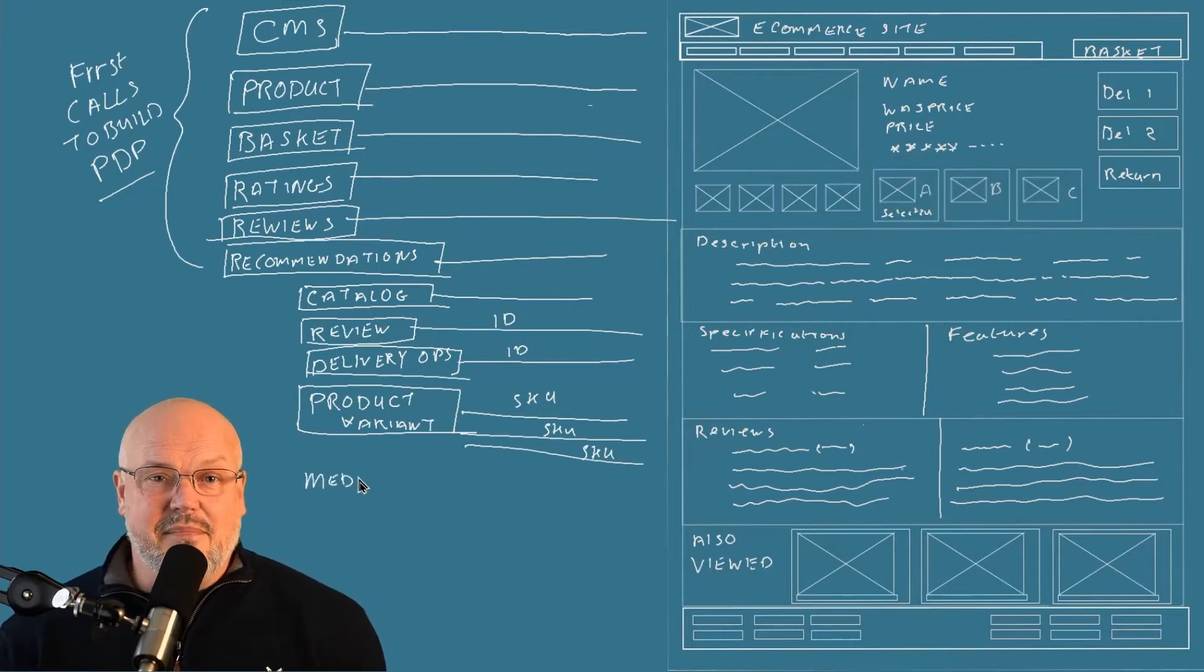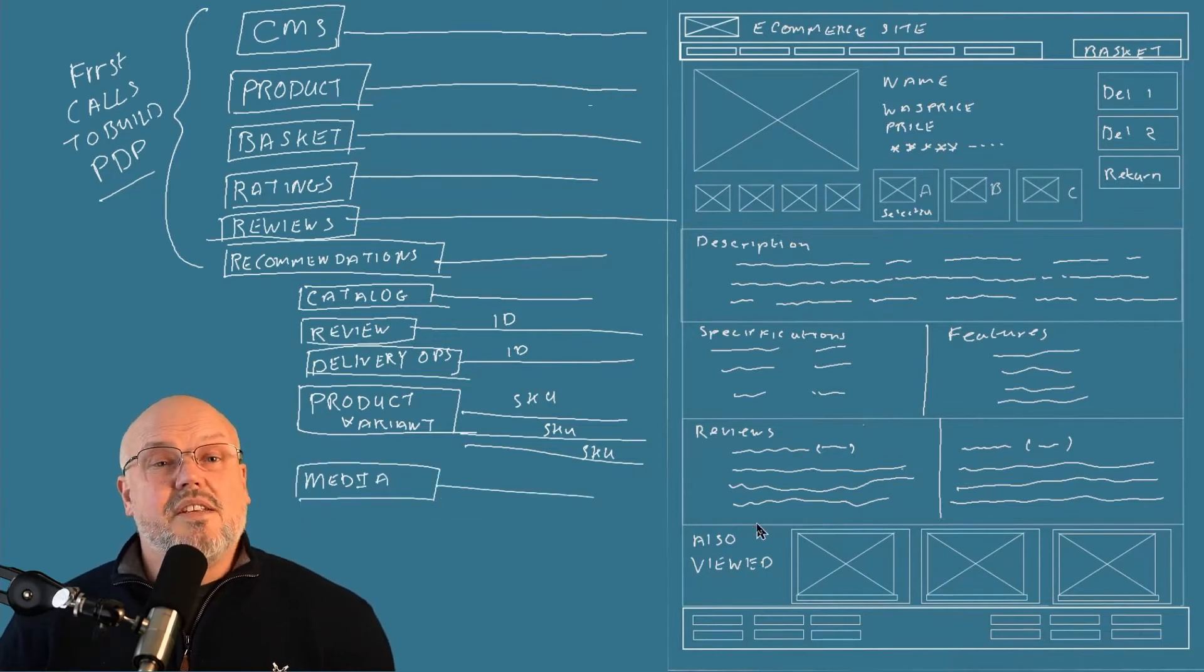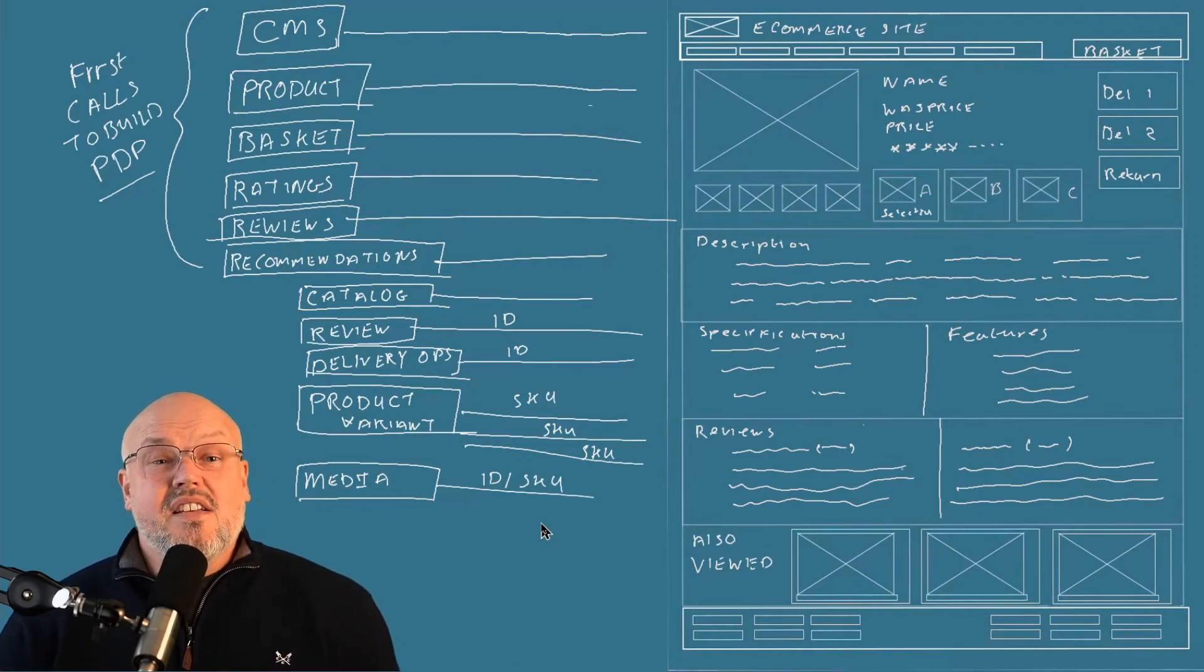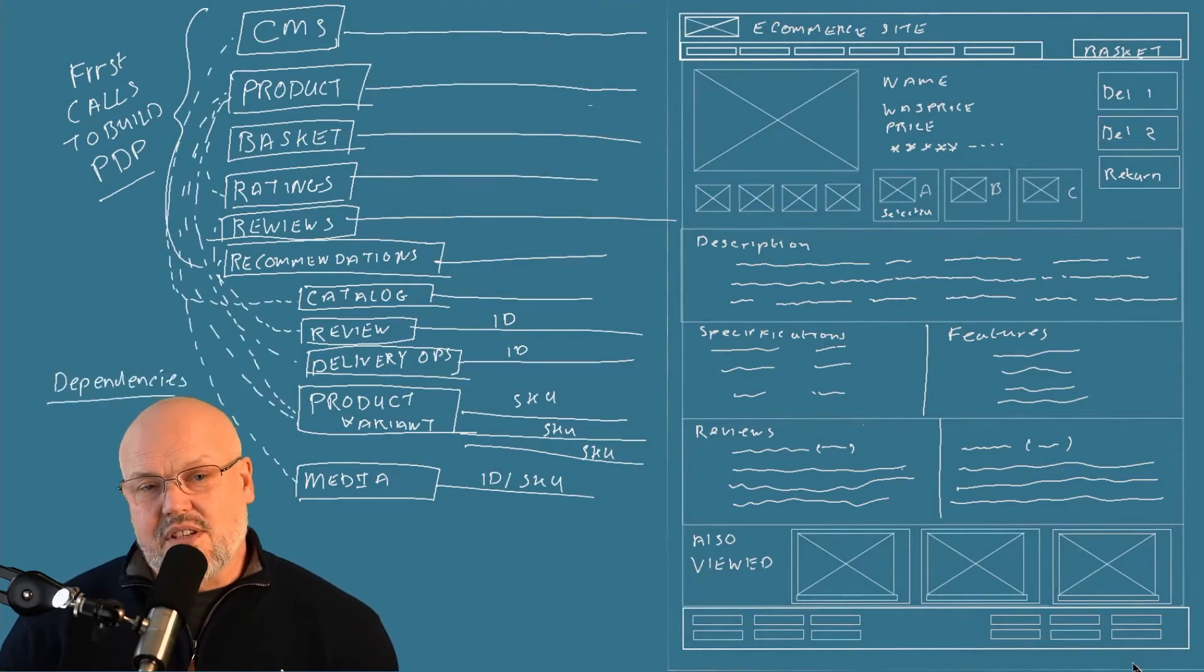It's also at this point you can call the media service to get the list of images and videos that are associated with the PDP. What this shows is how many microservice calls we actually have to make to build a product details page, how many sequences of microservice calls we need to make to build a product details page, and the dependencies between these microservices.